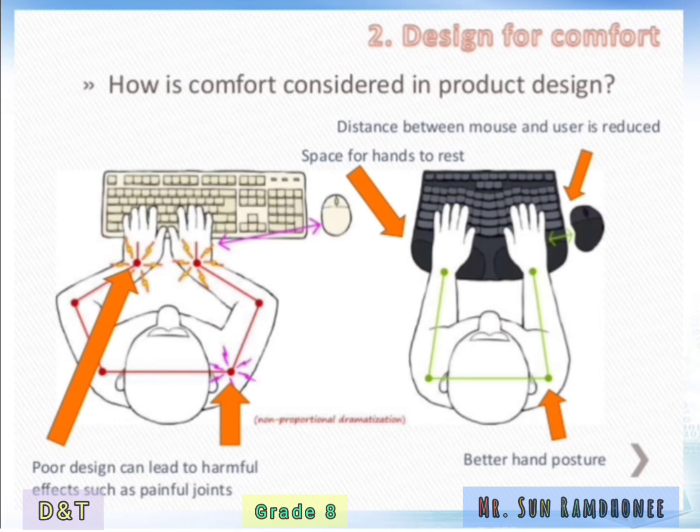The next example is that of a keyboard. As you can see, the hands are not in a natural position — you have to bend the wrist in a certain position to use the keys. The poor design can lead to harmful effects such as painful joints. To improve the keyboard, the alignment of the keys must be altered and the shape and design of the mouse also have to be modified.